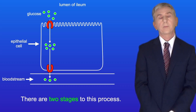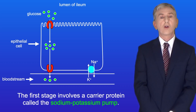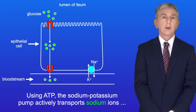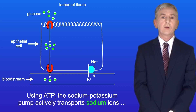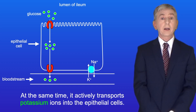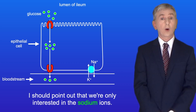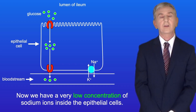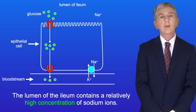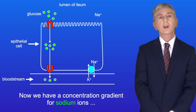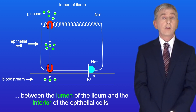There are two stages to this process. The first stage involves a carrier protein called the sodium-potassium pump — I'm showing the sodium-potassium pump in blue. Using ATP, the sodium-potassium pump actively transports sodium ions out of the epithelial cells and into the bloodstream. At the same time it actively transports potassium ions into the epithelial cells, though we're only interested in the sodium ions. So now we've got a very low concentration of sodium ions inside the epithelial cells, while the lumen of the ileum contains a relatively high concentration, creating a concentration gradient for sodium ions between the lumen and the interior of the epithelial cells.